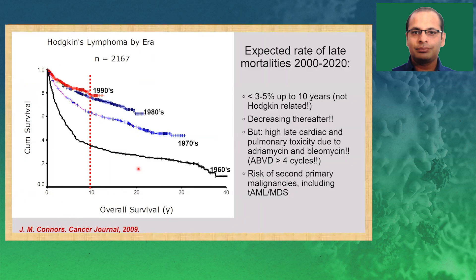Treatment — Hodgkin lymphoma has been a success story since the introduction of combined modality treatment. Outcomes have been improving since the 1960s, 70s, and 1990s. In the current era, mortality in early stage Hodgkin lymphoma is less than 5% at up to 10 years, and most cases not related to the disease unless there is relapsed or refractory disease. However, there is significant toxicity because of cardiac or pulmonary toxicity from chemotherapy or radiotherapy, as well as the risk of second primary malignancy including therapy-related AML or MDS. These long-term toxicities become an important concern when designing chemotherapy protocols or new trials.